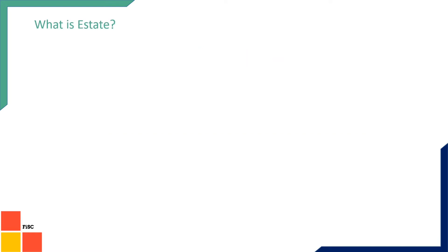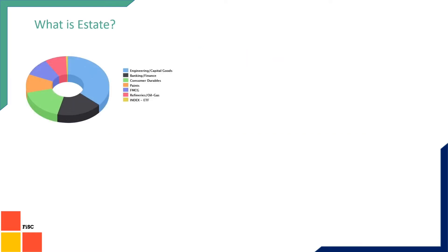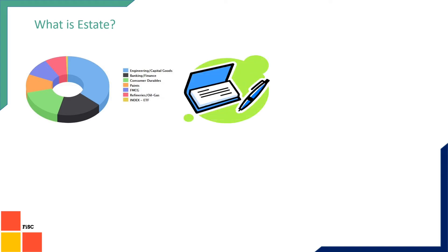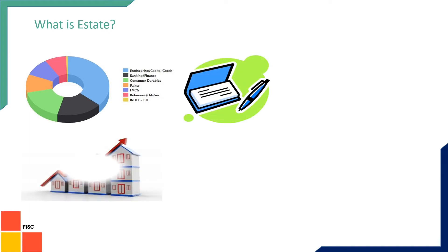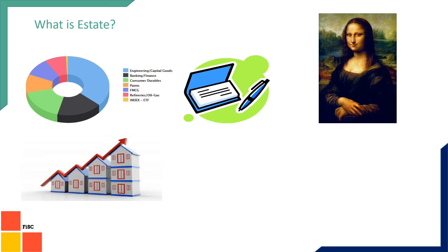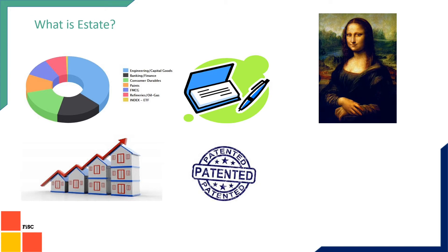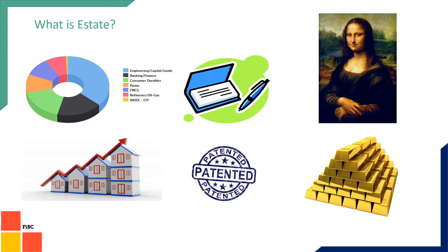First, we understand what is the estate. Whether you have a stock portfolio, a bank savings account, property or buildings, art and culture like investments in paintings, anything which you have a patent of, or any trademark you own, or even a lot of gold or any other kind of metal, jewelry, or commodity — all these are called your estate.